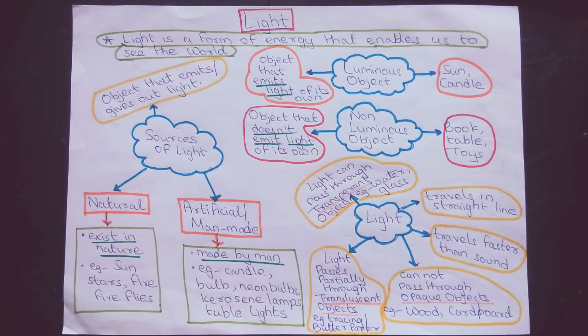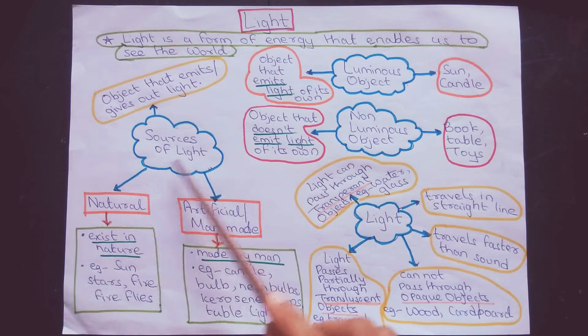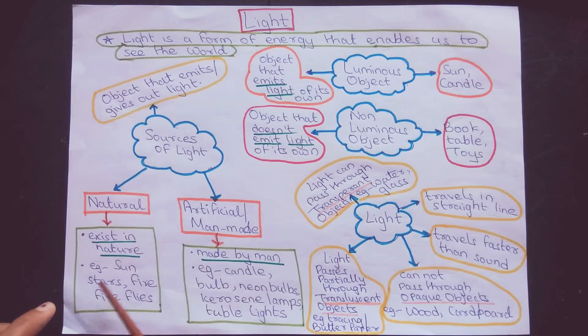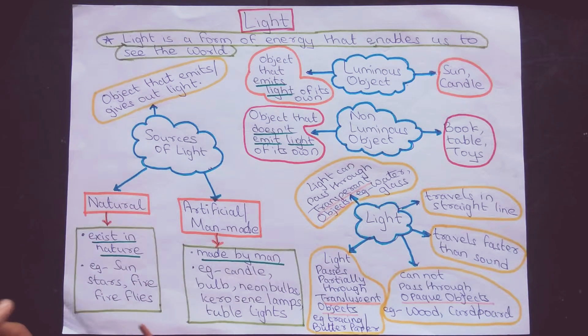The light which we get from objects that are already present in nature, those sources of light are known as natural sources. Examples include the sun, stars, fire, and fireflies.